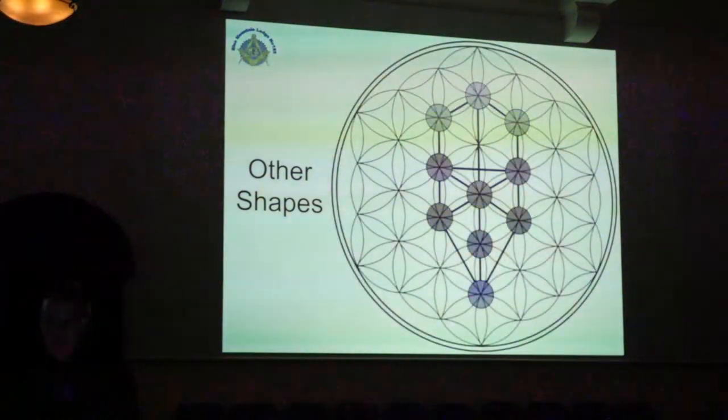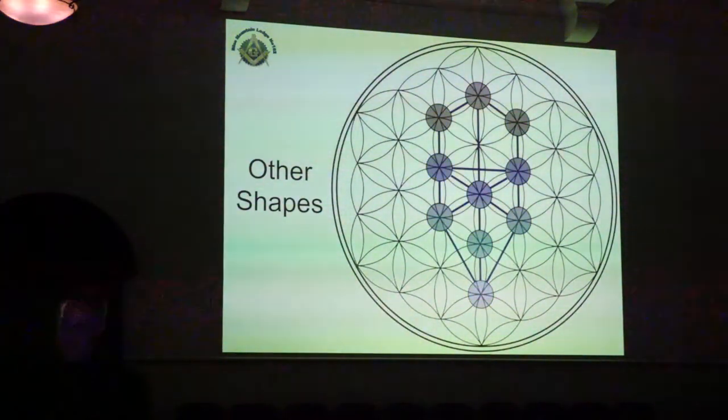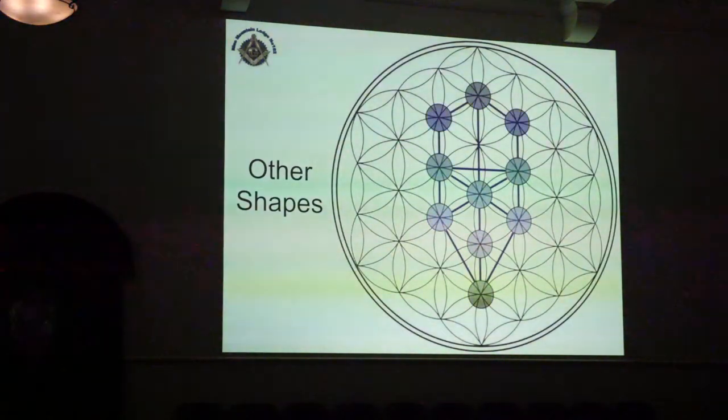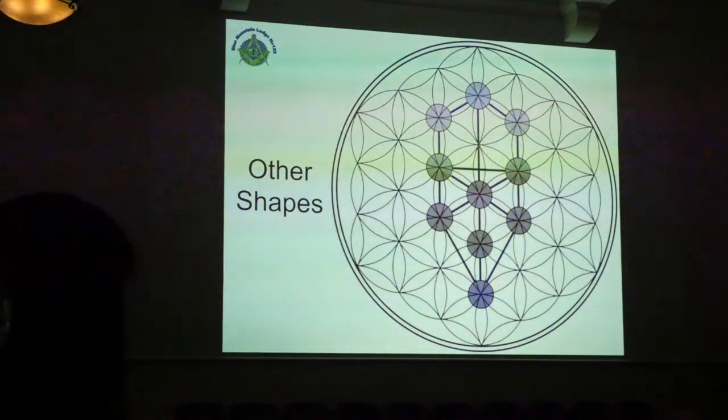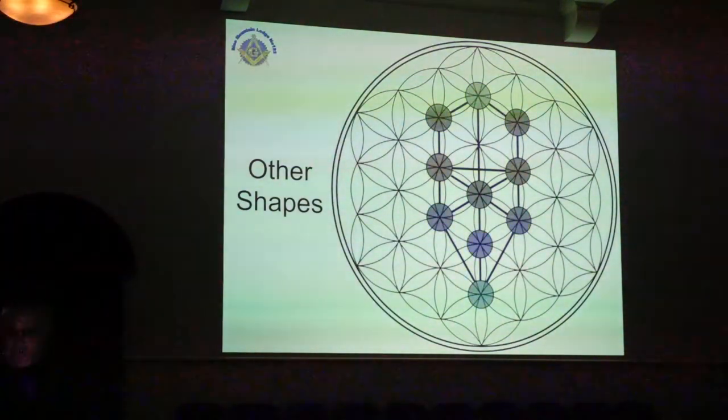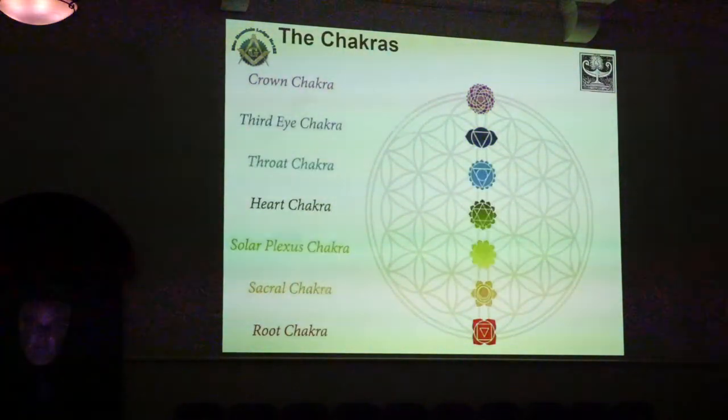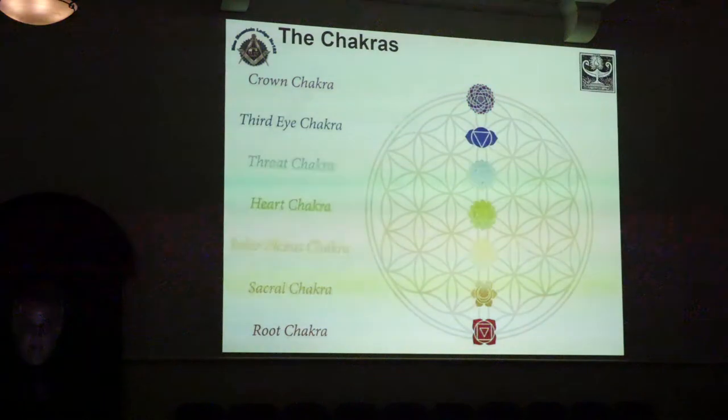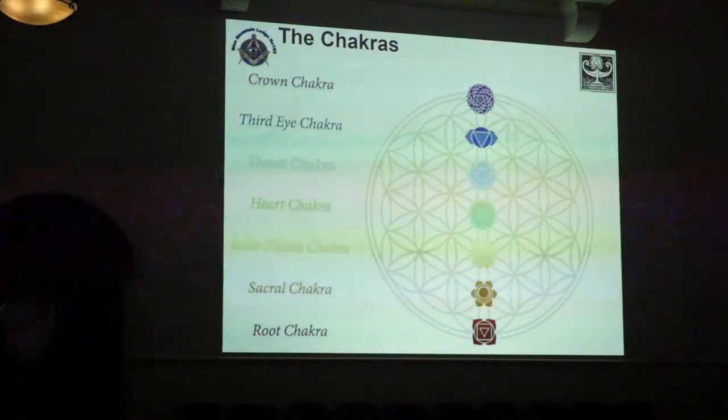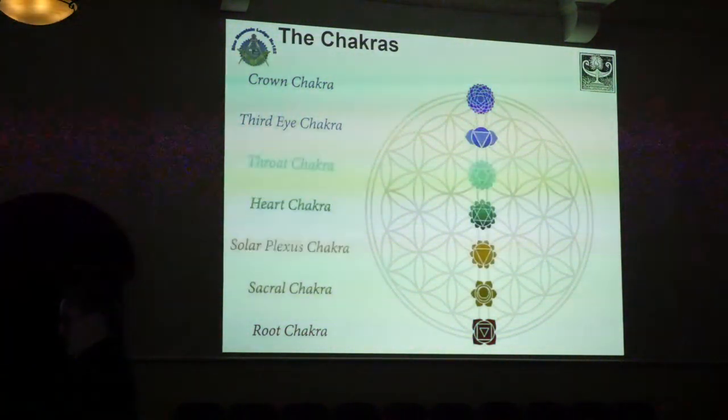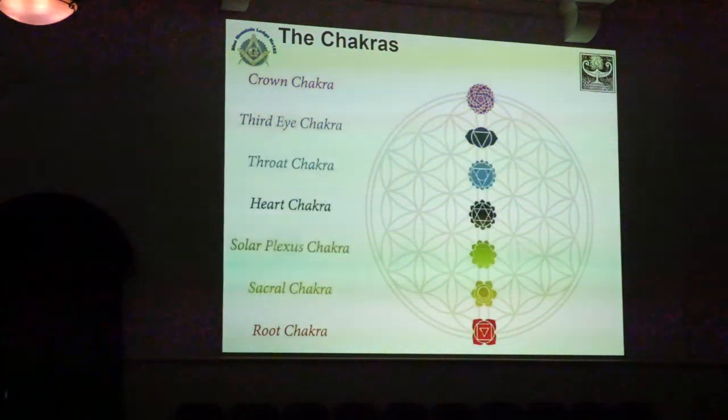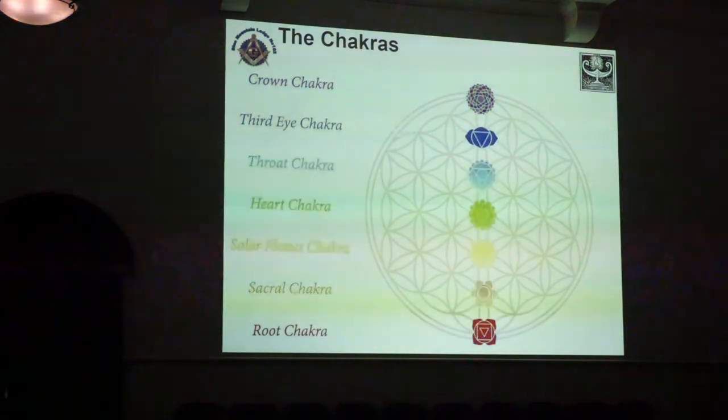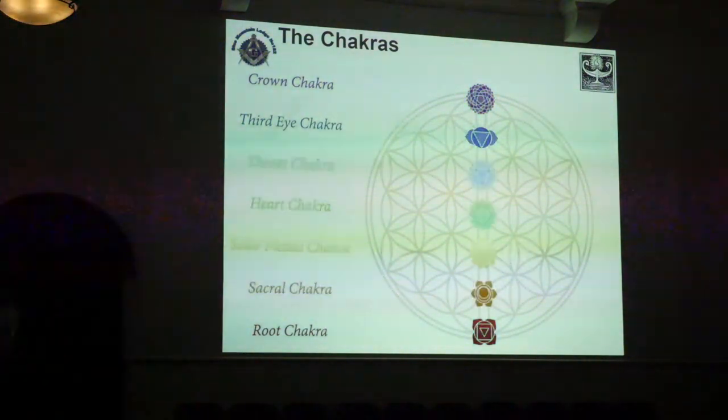So what other shapes are in the Flower of Life? What's this one? The Tree of Life. The Tree of Life, yes. Here we have the Kabbalistic Tree of Life. And also we have the chakras. I want to point out, right in the middle, the heart chakra. Please keep in mind that shape for later on. It will come in handy in the later part of this presentation.